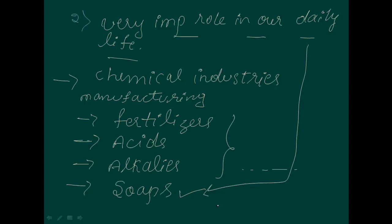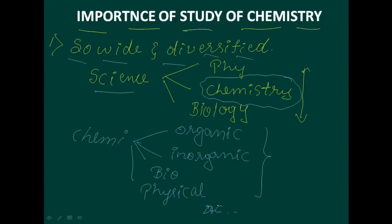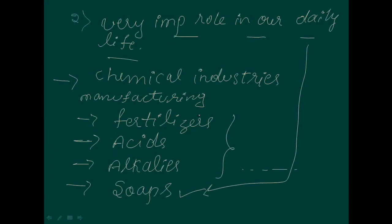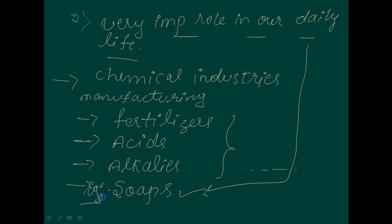The first point is that chemistry is so wide and diversified — how you explain this with science branches and chemistry branches. The second point is the very important role in our daily life, meaning chemical industries manufacturing fertilizers, acids, alkalis, and soaps. Soap is a very good example for our daily life. This is about the important study of chemistry.